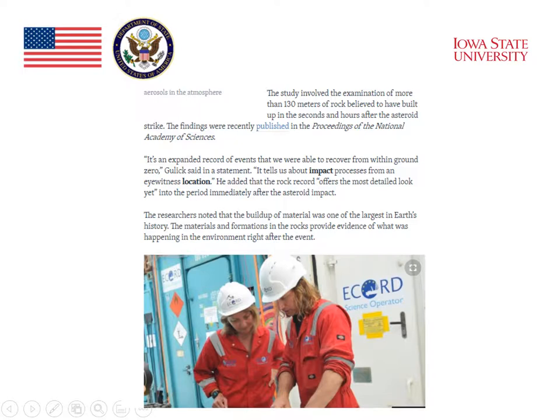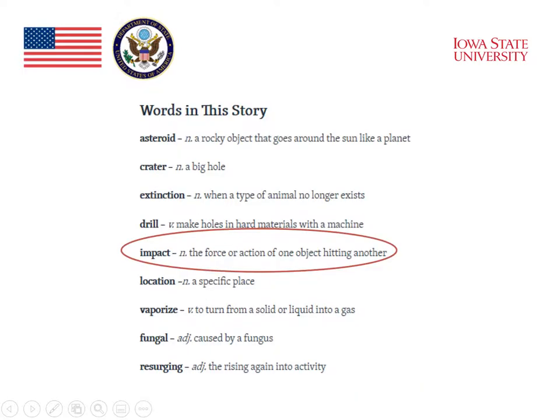Some of the words are in bold, such as in the middle of the text. It tells us about impact processes from an eyewitness location. The word 'impact' is highlighted, meaning that that is the vocabulary word. Following the story, there is a list of those words that were highlighted.